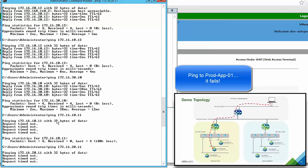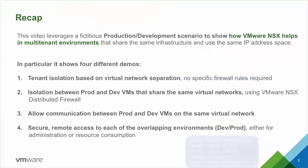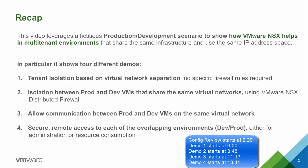This test concludes the last demo of this video. As a recap: we have seen how to use NSX in multi-tenant environments to provide tenant isolation based on virtual networks without any firewall rule; how to provide isolation between tenants sharing the same virtual networks using the NSX firewall; how to change the configuration to allow communication between both tenants; and how to use the SSL VPN functionality of NSX to provide secure remote access to each of the environments.